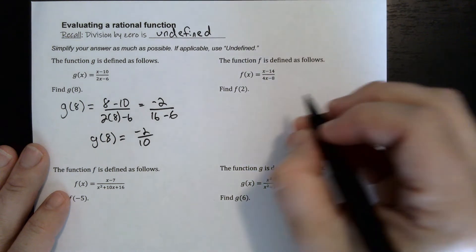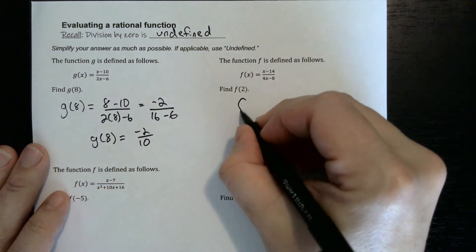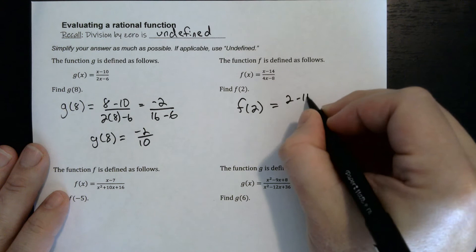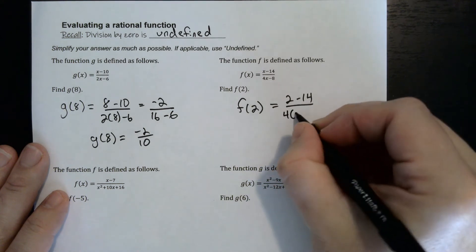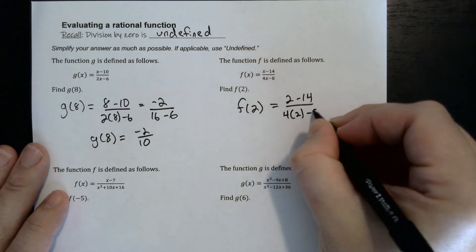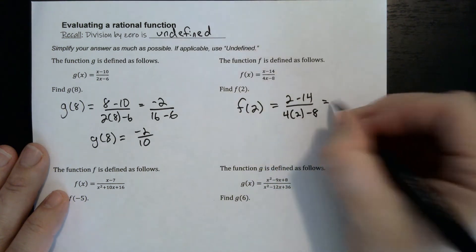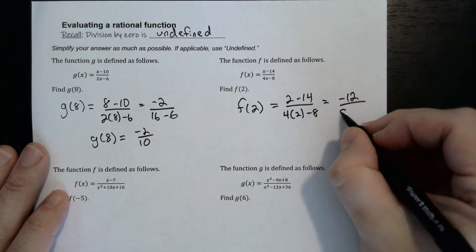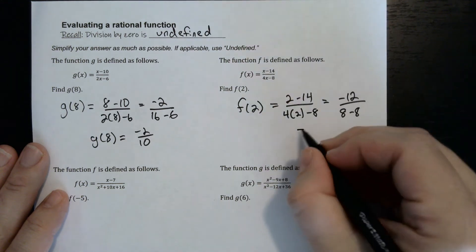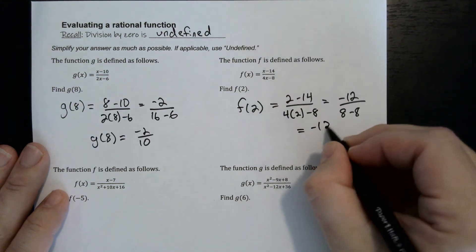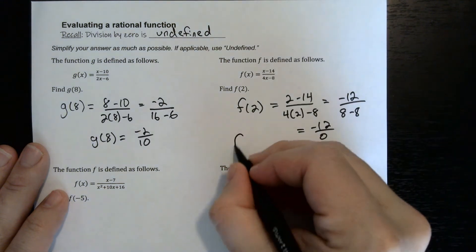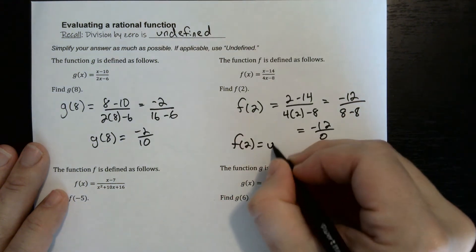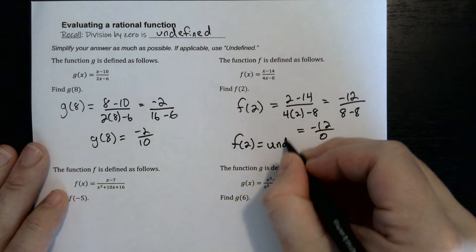For f of x equals x minus 14 over 4x minus 8, f of 2 equals 2 minus 14 over 4 times 2 minus 8. The top becomes negative 12, and the bottom becomes 8 minus 8 which is 0. So we get negative 12 over 0, which means f of 2 is undefined.